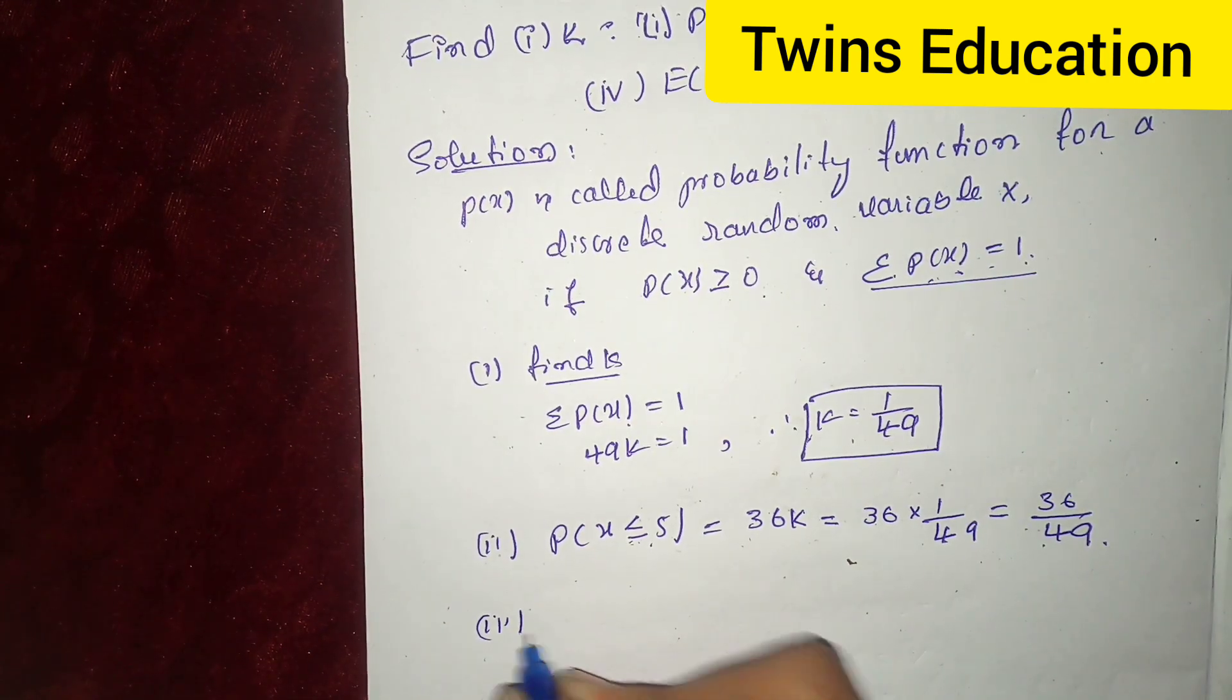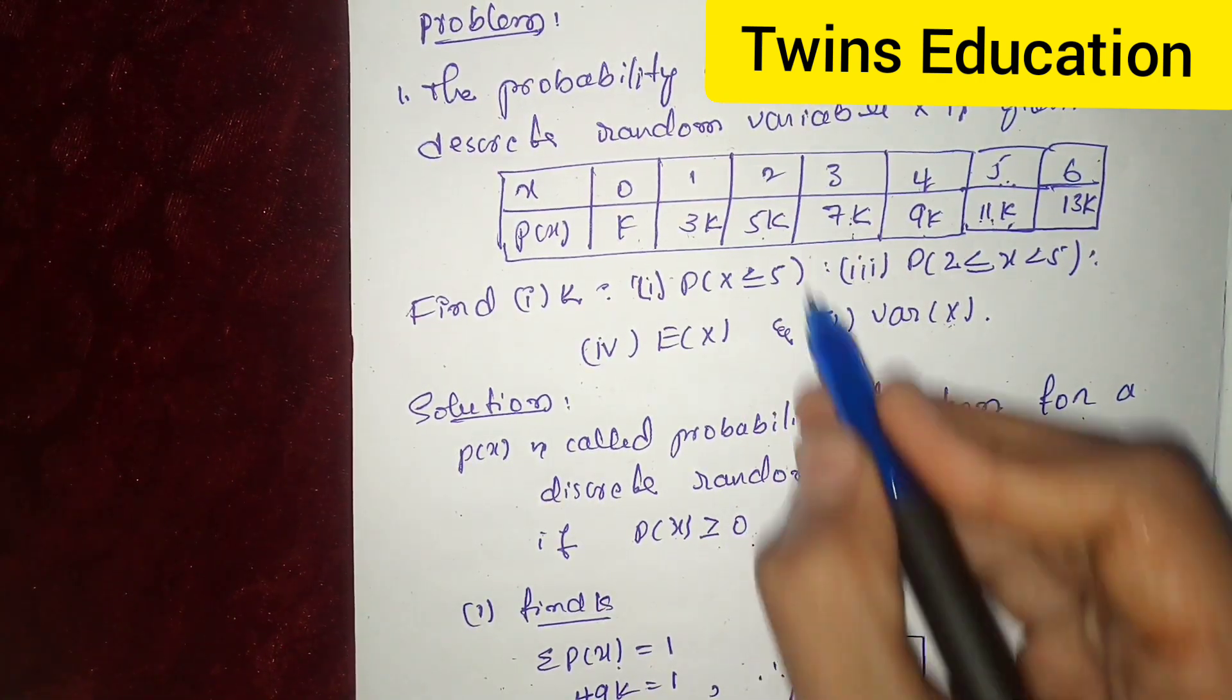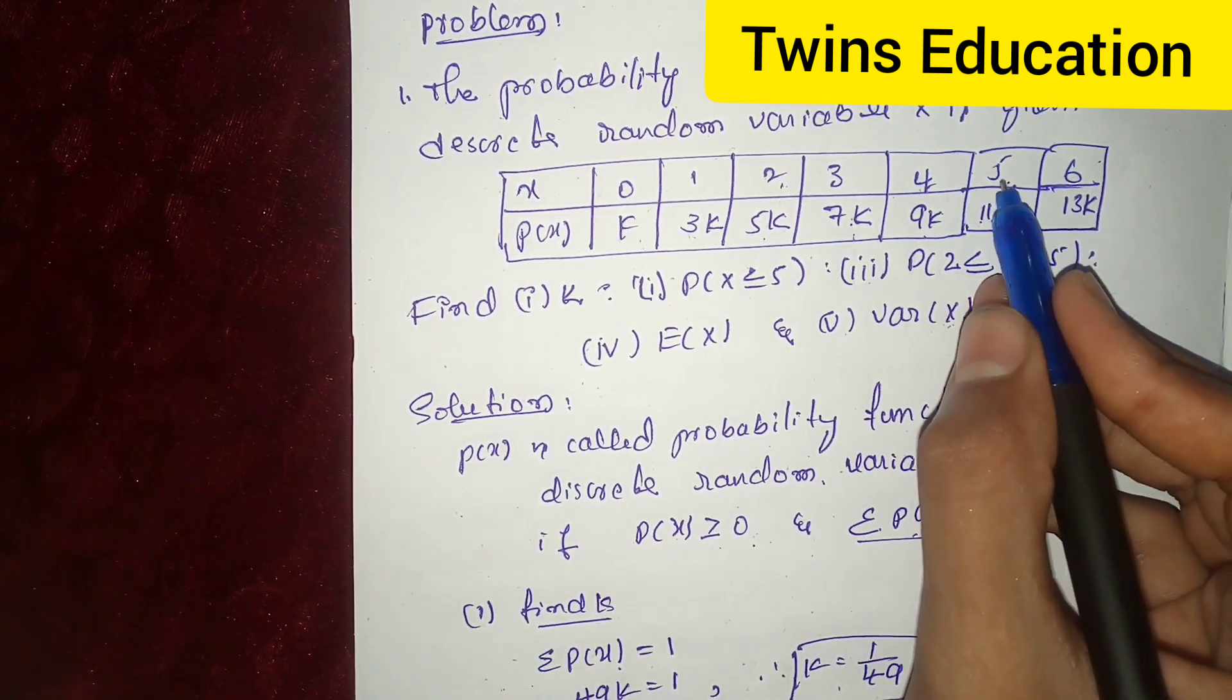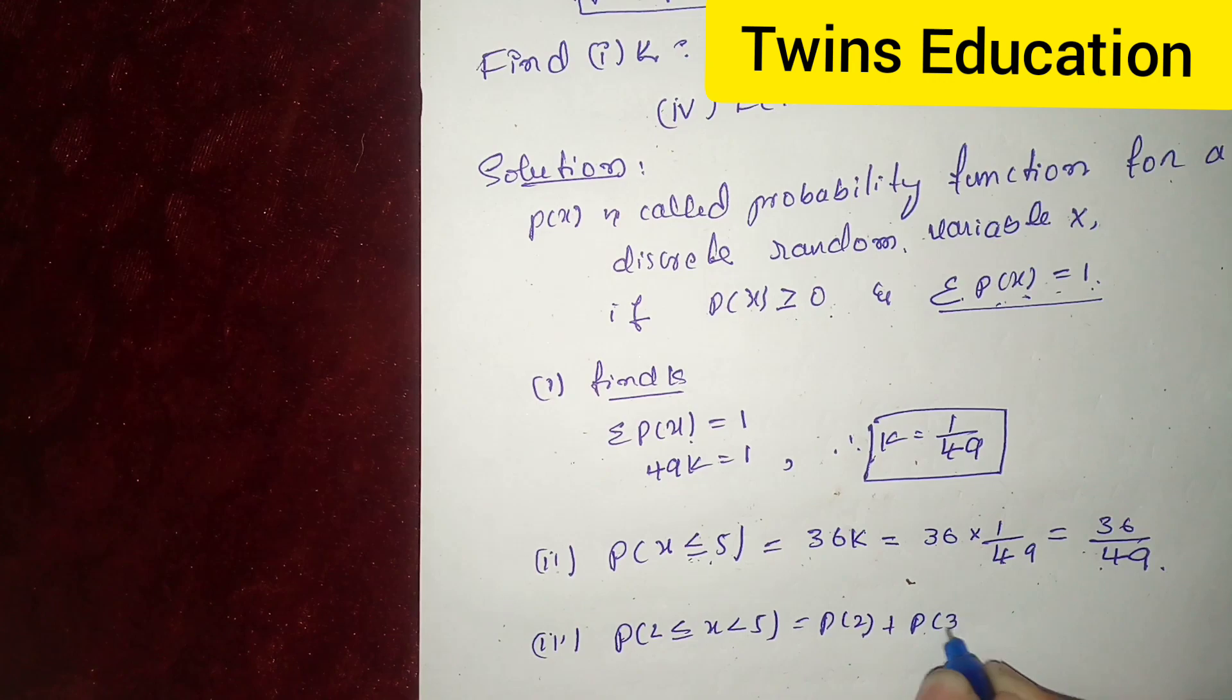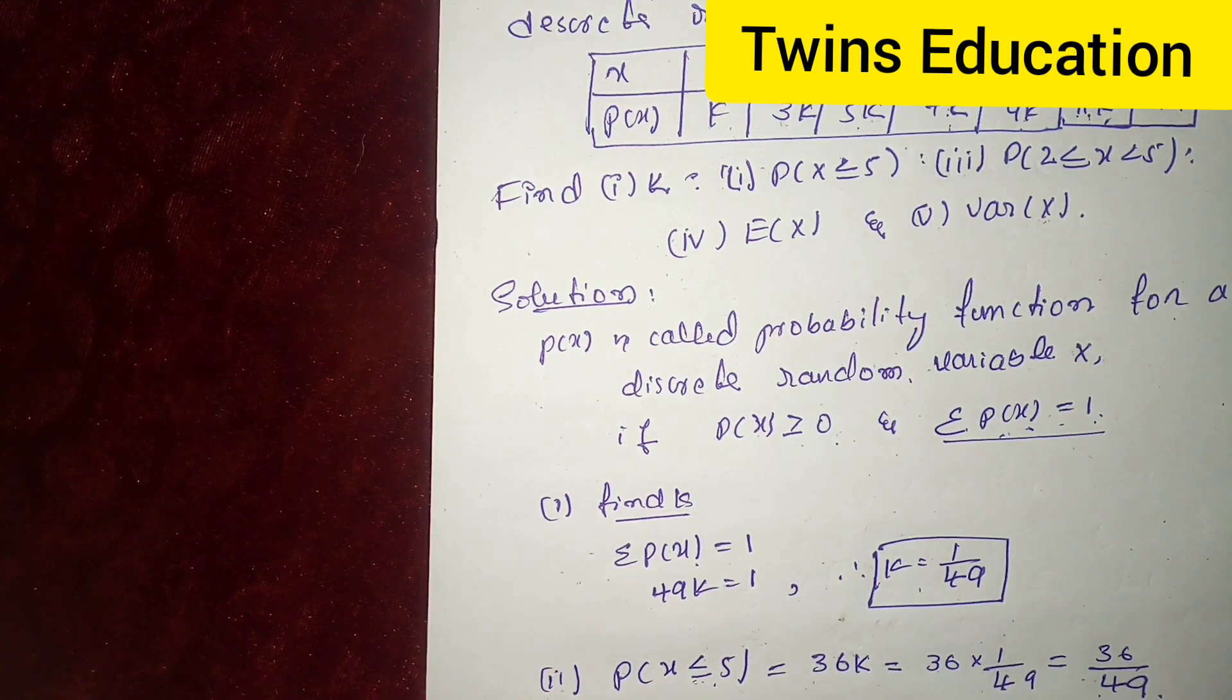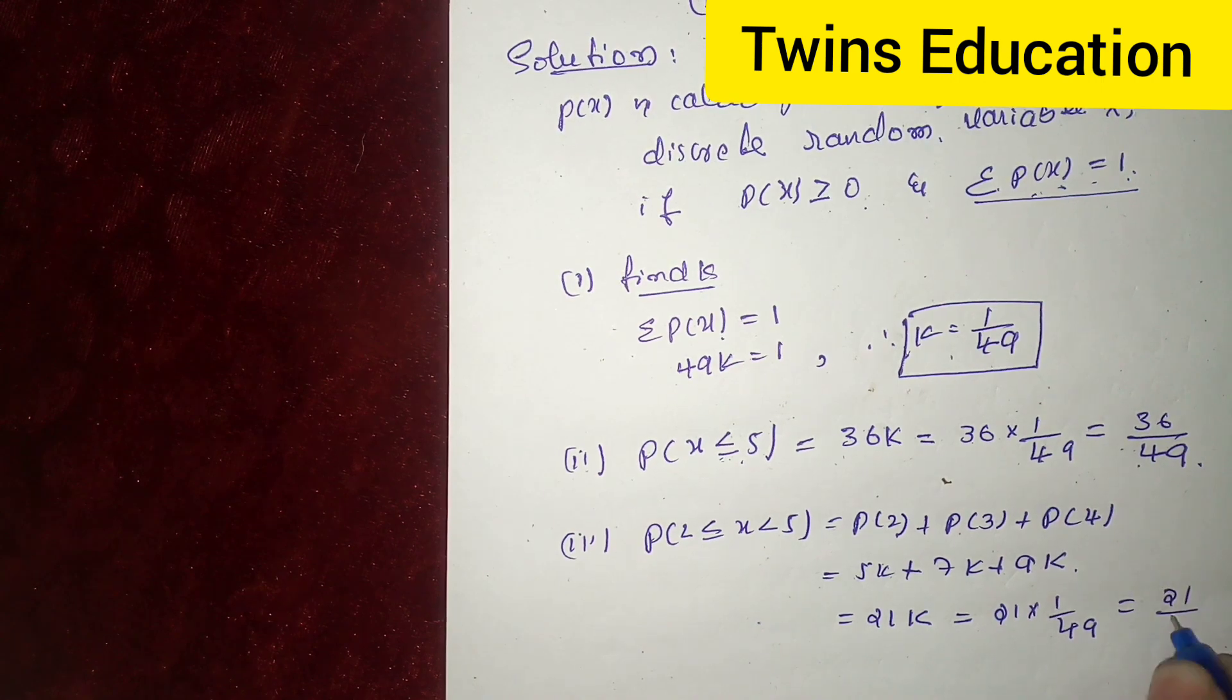Now, third condition is p of 2 less than or equal to x less than 5. Here, x ranges from greater than or equal to 2 and less than 5, not equal to 5. That means p of 2, p of 3, p of 4. We have to consider 5k plus 7k plus 9k. This is 21k. What is the value of k? 21 into 1 by 49. This is 21 by 49.